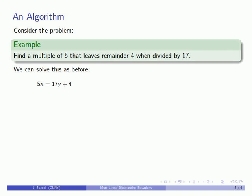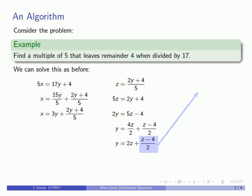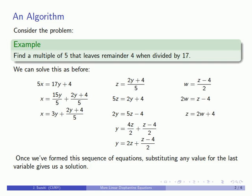And so we have our equation: 5x equals 17y plus 4. We'll divide by 5, split off a part that's divisible by 5 and what's left over. We'll make sure our fraction is equal to some whole number and we'll cross multiply and continue to get this sequence of equations. Substituting any value into the last variable is going to give us a solution.